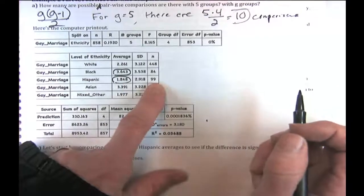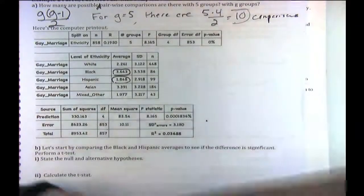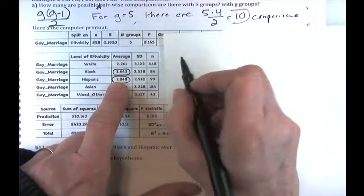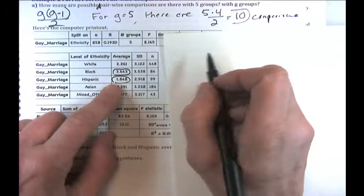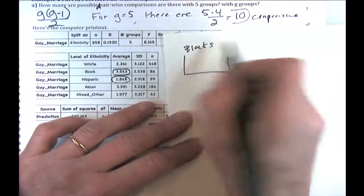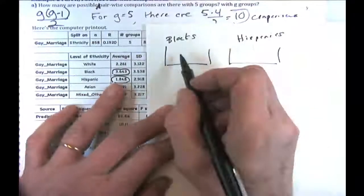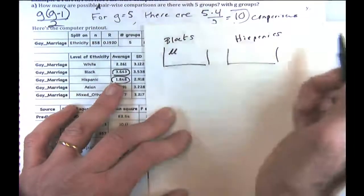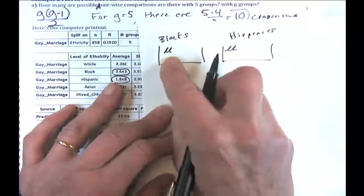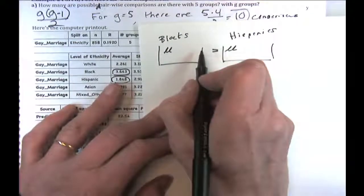The null hypothesis is that the population mean for Blacks equals the population mean for Hispanics — using Greek letters mu for the true population averages. We just happen to see a difference in our samples of n=84 (Blacks) and n=99 (Hispanics). The standard deviations from the sample are 3.538 for Blacks and 2.918 for Hispanics.